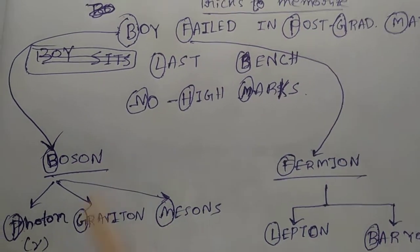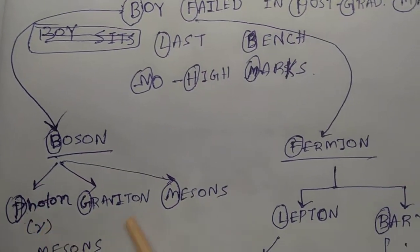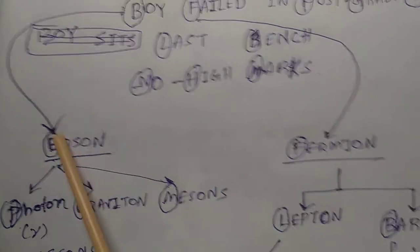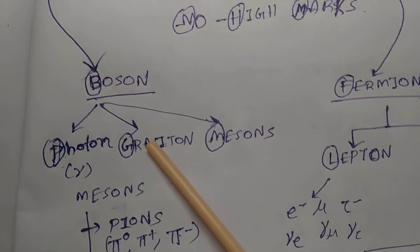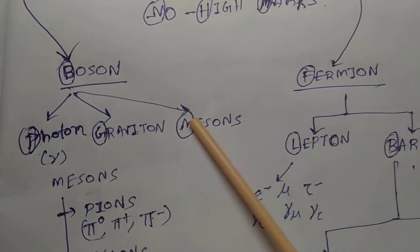Photon, graviton, and mesons. There are three types of classification of bosons. What are the classifications? There are no types of classification of photons, there are no classification of gravitons, but there are three types of classification of mesons.